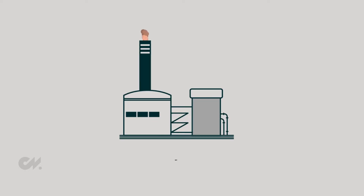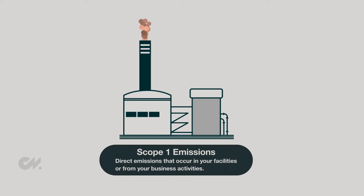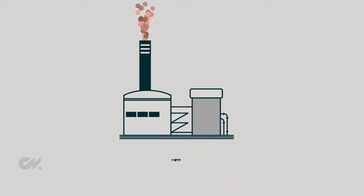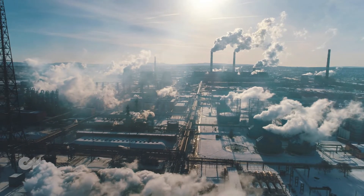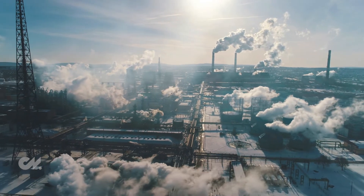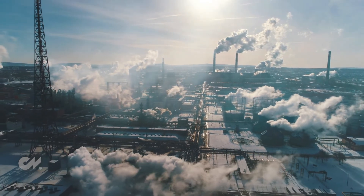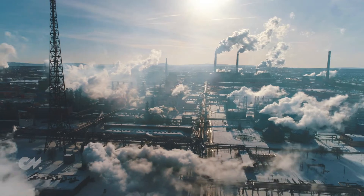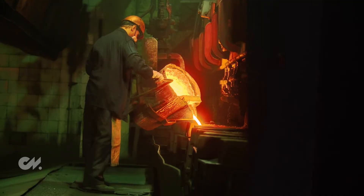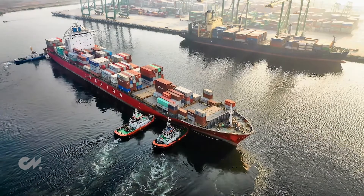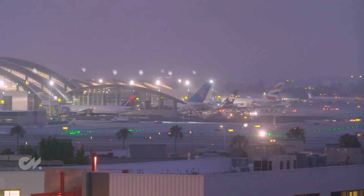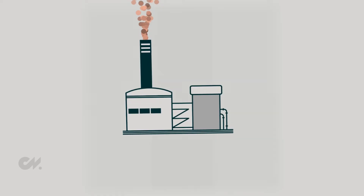Scope 1 emissions are the direct emissions that occur in your facilities or from your business activities. So for a steel mill, this includes things like industrial emissions coming from your blast furnaces and emissions from your company's vehicles or from business travel.